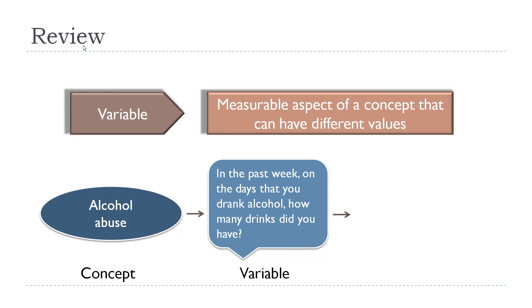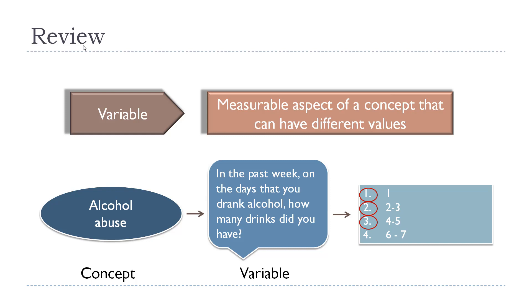And then if we have certain response options that they must choose from — like number one means that they only drank one drink, number two means they drank two to three, number three means four to five, etc. — then those numbers that are circled there are the values of my alcohol abuse variable.